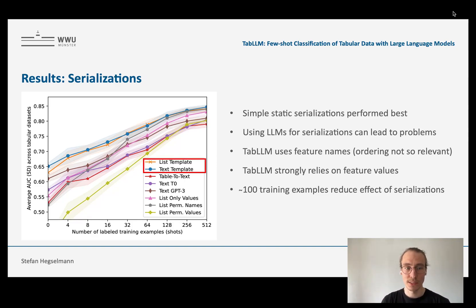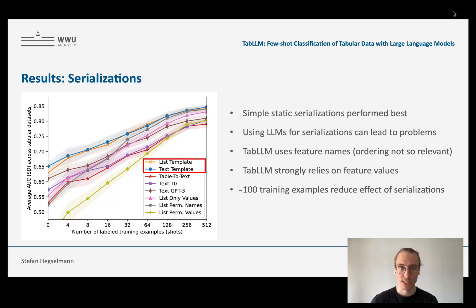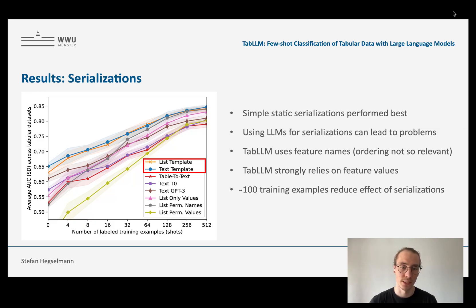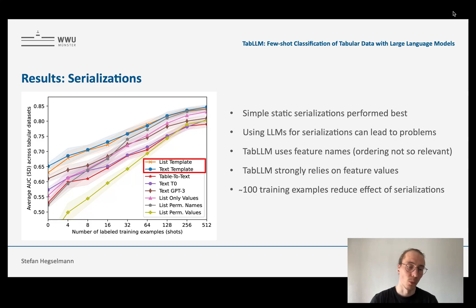Here are the results for the different serializations. On the x-axis is the number of training examples — zero means zero-shot, no training — and we increase it step by step. On the y-axis is average performance across all nine datasets. The static serializations — the list and the simple text template — consistently perform best, shown as the blue and orange curves. We can even see that the text template, where we have these sentences, is slightly better in the zero-shot case. So if it's closer to text, we actually get a better performance.